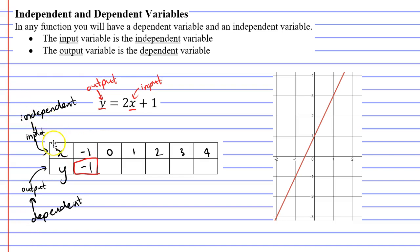On any table of values, you will always have your inputs or your independent variables on the top row and your outputs or the dependent variables on the bottom row.